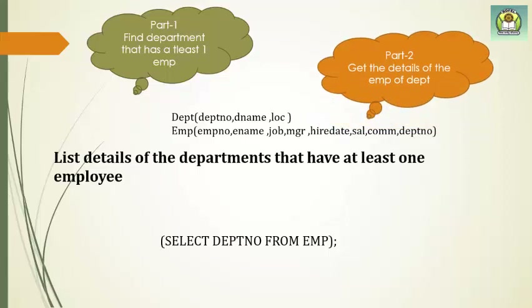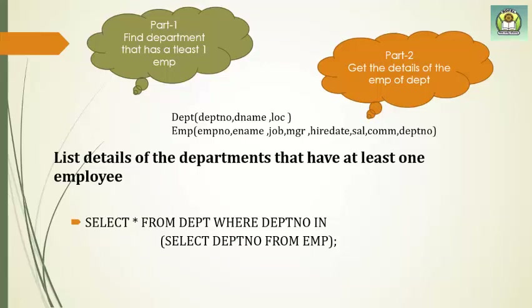Second part: get the details of the department. Now that we have departments where at least one employee exists, we fetch their details. The main query is: SELECT * FROM department WHERE department number IN (SELECT department number FROM EMP). We are using IN to remove the error of multiple rows returned by the inner query.